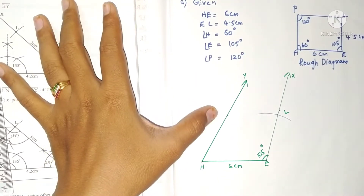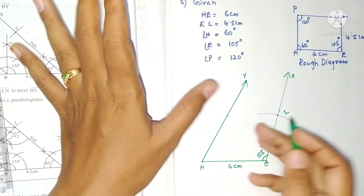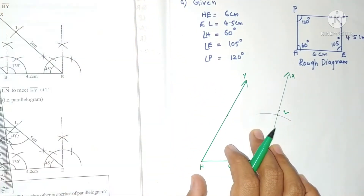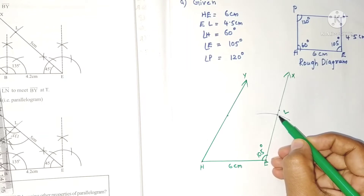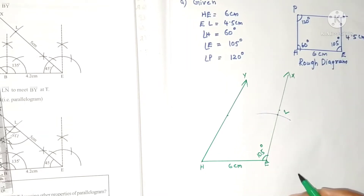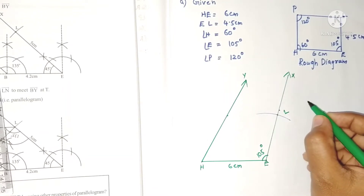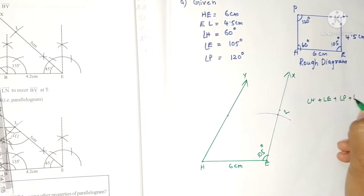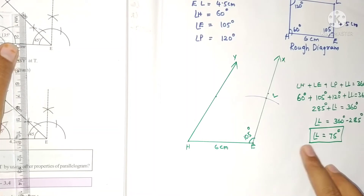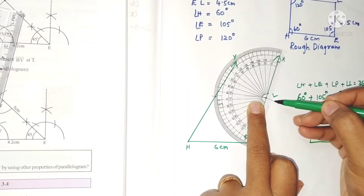We cannot locate vertex P directly, so we will find angle L instead. We know that in any quadrilateral, the sum of the four angles is 360 degrees. Using that property, we can calculate angle L. Angle H + angle E + angle P + angle L = 360 degrees, so angle L = 360 - 60 - 105 - 120 = 75 degrees.